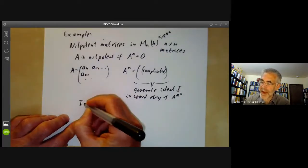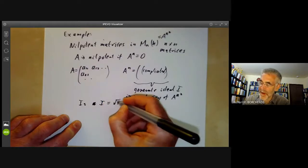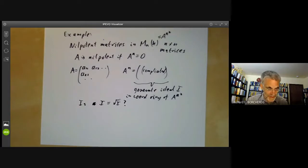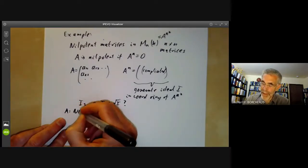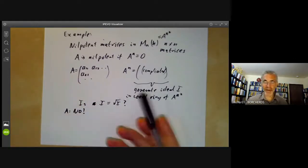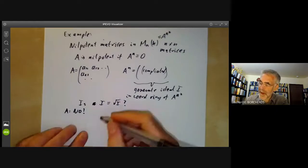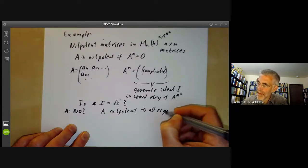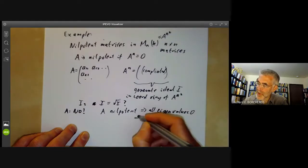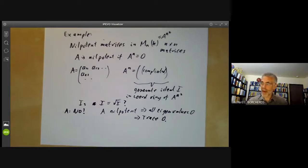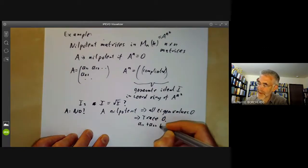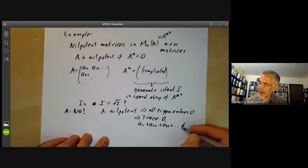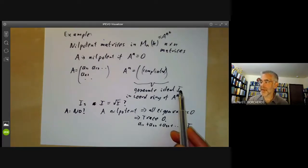Now we can ask, is the ideal i equal to the radical of i? And the answer is no. So it's a very natural ideal. It's just the most obvious way of defining nilpotent matrices. And yet it turns out to be not radical. In order to see this, if A is nilpotent, this implies all eigenvalues zero, which implies the trace is zero. Well, the trace is just A_11 plus A_22 plus A_33 and so on. Well, this is not in i.